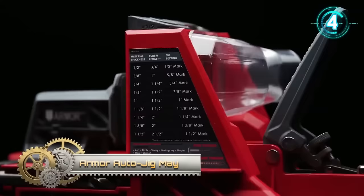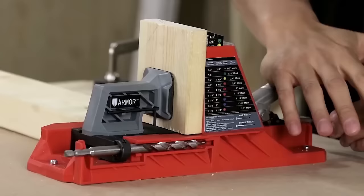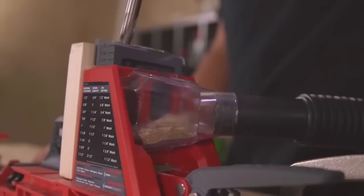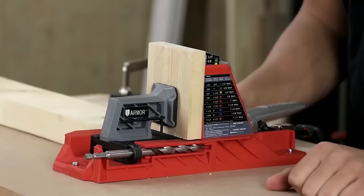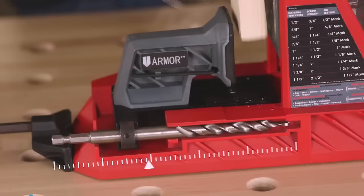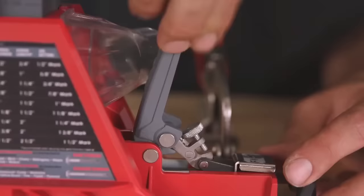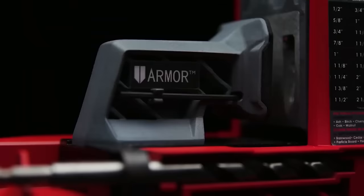The Armor Auto Jig May is a pocket hole jig designed for woodworkers of all skill levels. It offers automatic self-adjustment for the drill guide block, drill bit collar, and clamp, ensuring consistent and precise pocket holes without the need for manual adjustments. The jig features a clear and user-friendly drill guide for easy alignment, a dust collection port to maintain a clean work area, and a durable yet lightweight construction for portability. Whether you're working on furniture, cabinets, or home decor, the Auto Jig May is a versatile tool that simplifies the creation of strong and durable pocket joints. It is an ideal choice for both beginners and experienced woodworkers.